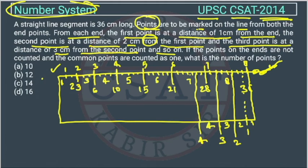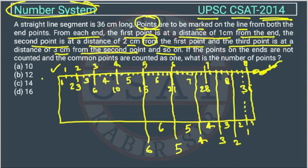The fourth point is at distance 4. The fifth point is at distance 5. The sixth point is at distance 6. The seventh point is at distance 7. The eighth point is at distance 8.